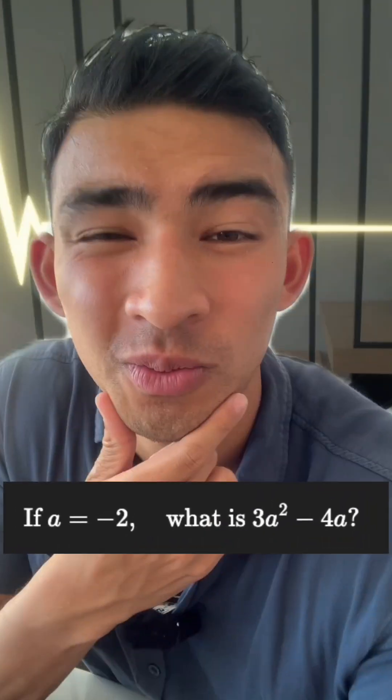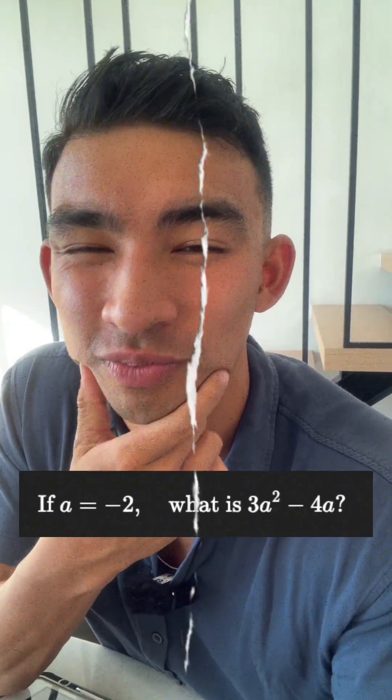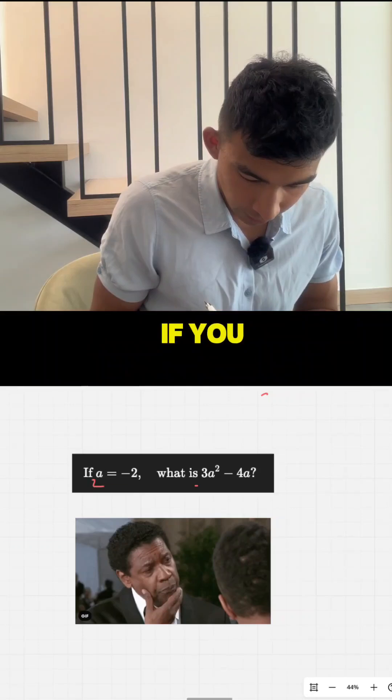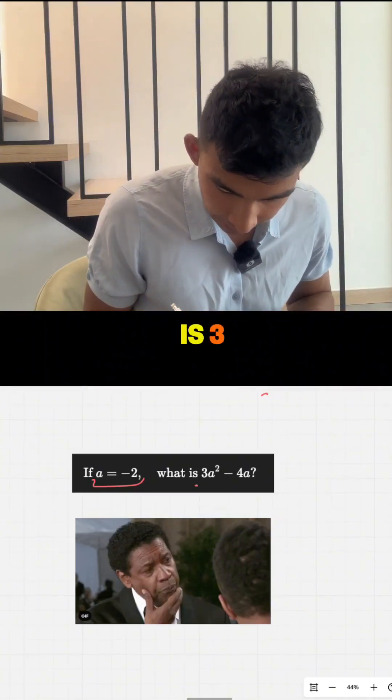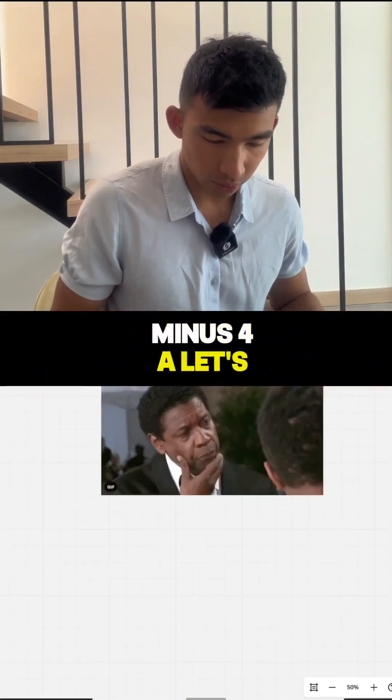Can you solve this question? Cool, so let's walk through guys. If you have a equals minus 2, what is 3a squared minus 4a? All right, let's work it out together.